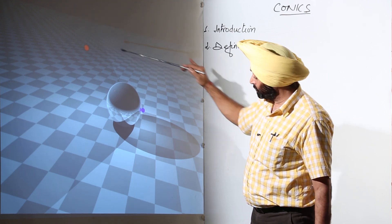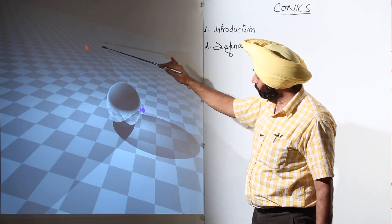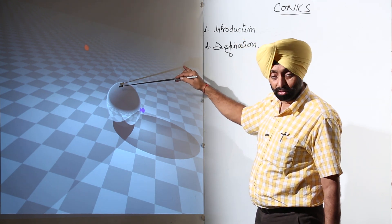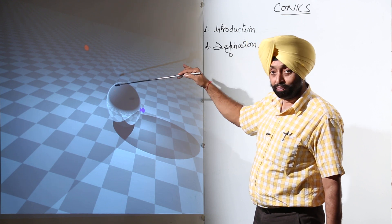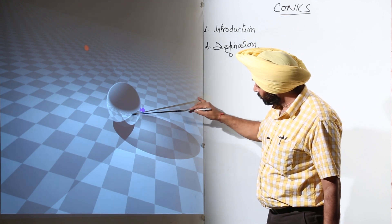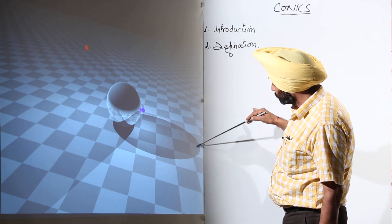One with orange and one with blue. When orange light is thrown on the ball, what type of figure is generated? We are generating an ellipse. Just look here, an ellipse has been generated.